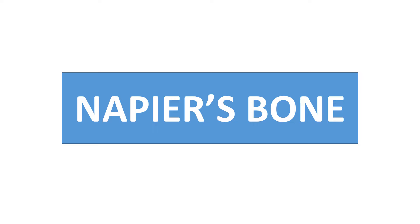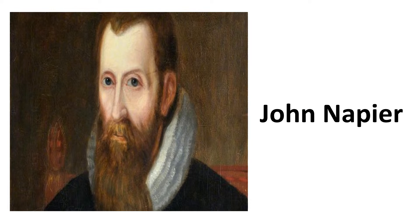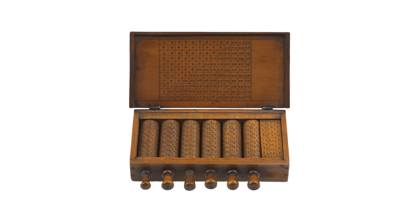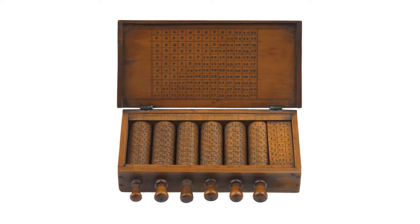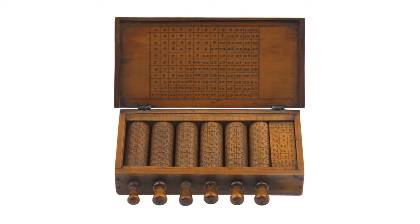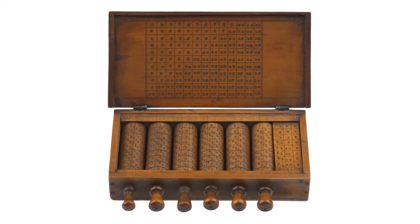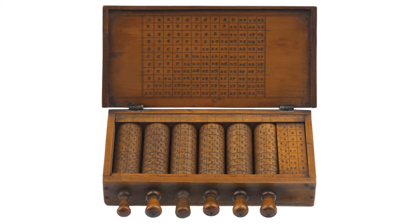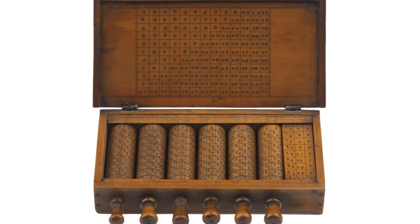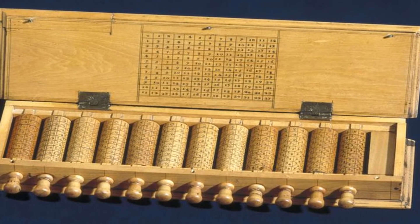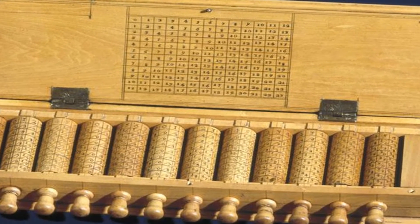John Napier, a Scottish mathematician, invented a calculating device called Napier's Bone in 1614. It consisted of a wooden box containing rotating cylinders, each of which had the digits from 0 to 9. It could multiply, divide and find square roots of numbers by using simple addition and subtraction. His biggest achievement was the invention of logarithm.